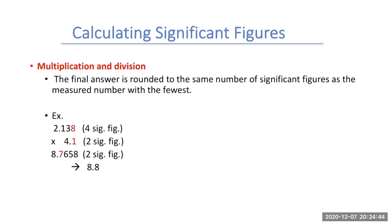For multiplication and division, our final answer is always rounded to the same number of significant figures as the measured number with the fewest significant figures. For example, 2.138 times 4.1: 2.138 has four significant figures, and 4.1 has two significant figures, so my answer can only have two significant figures. When you multiply this out on a calculator you get 8.7658, but only the first two digits matter, giving us 8.8.